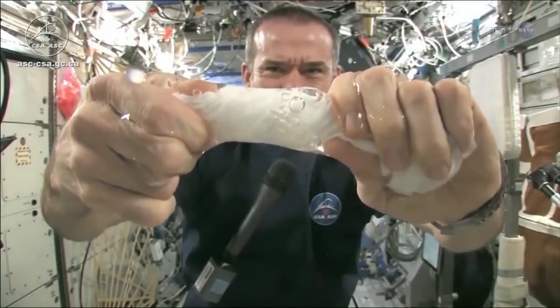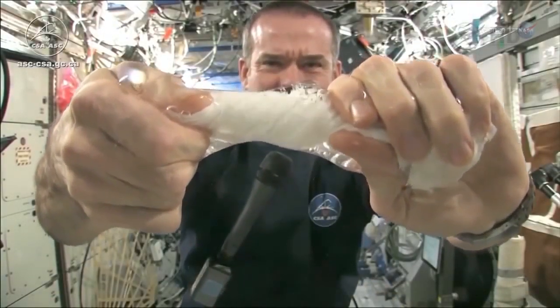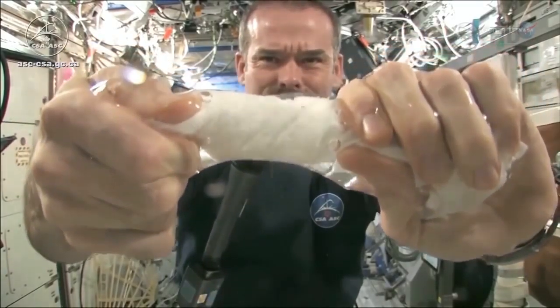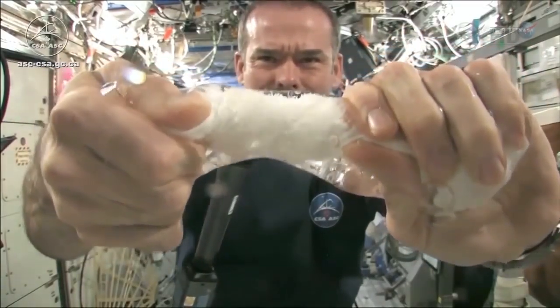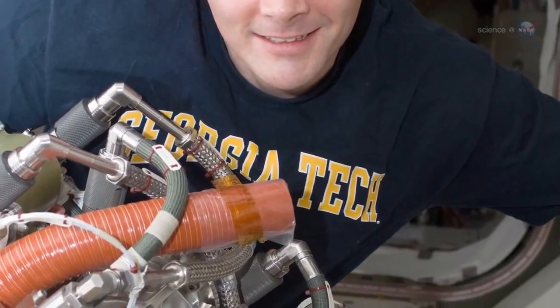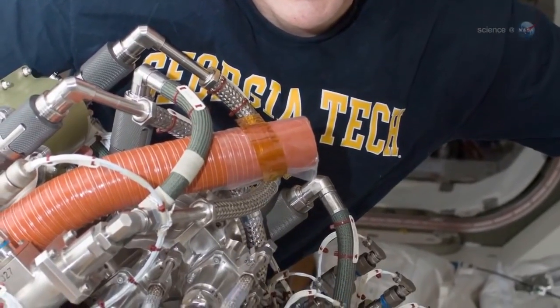Coffee is not the only liquid that misbehaves in space. Cryogenic fuels, thermal coolants, potable water, and urine do it too. The behavior of fluids is one of the most unintuitive things in all of spaceflight.